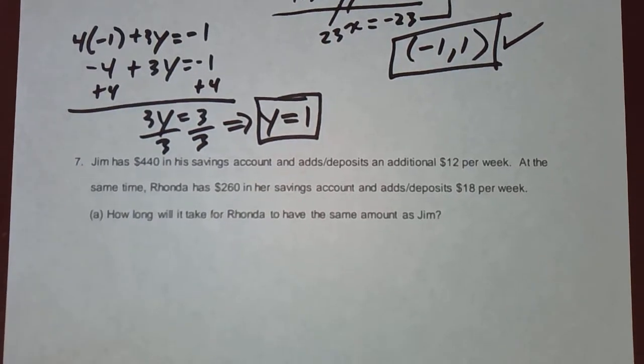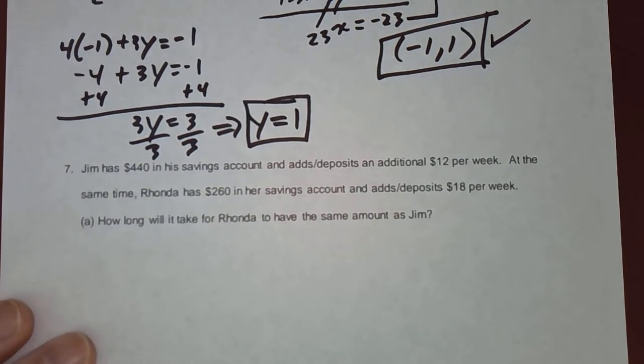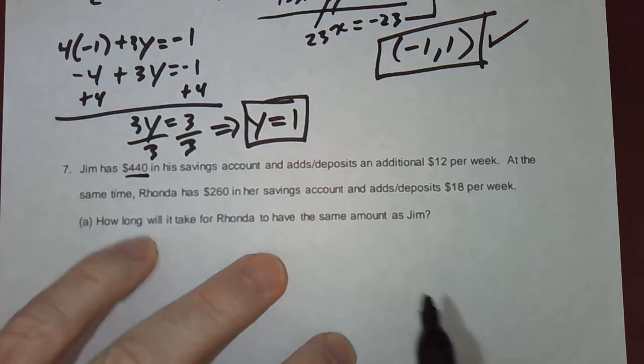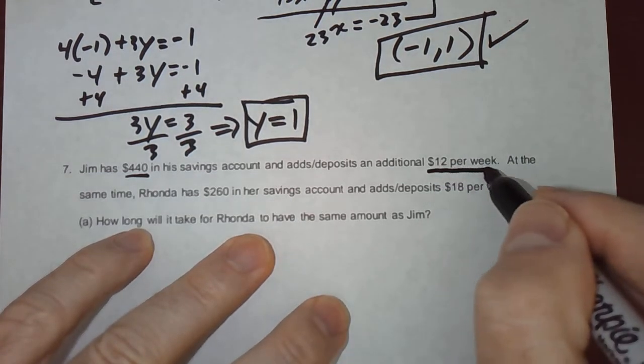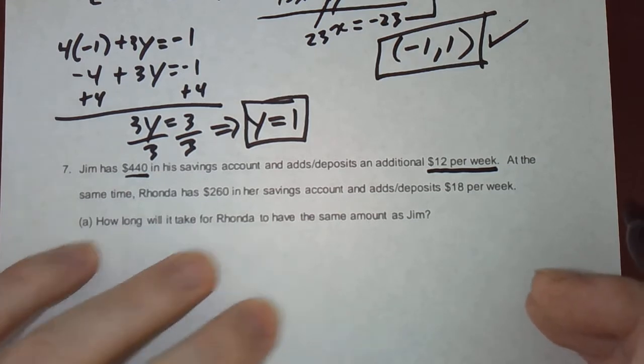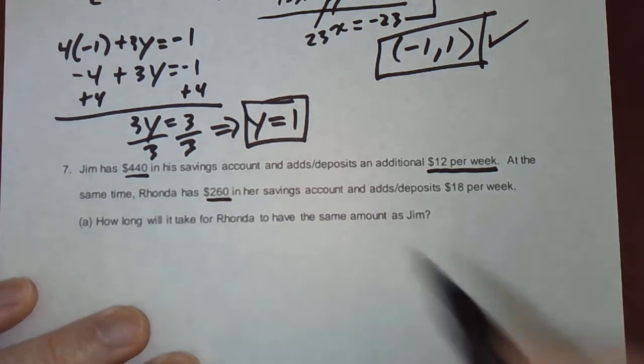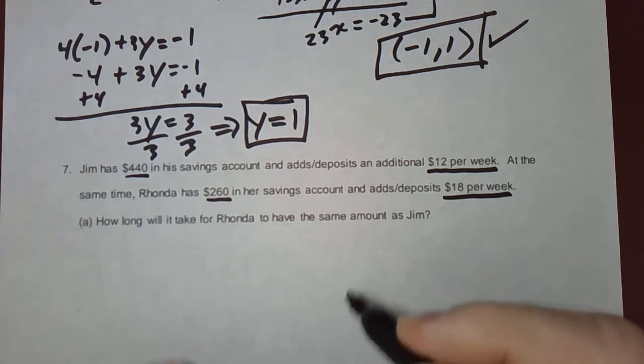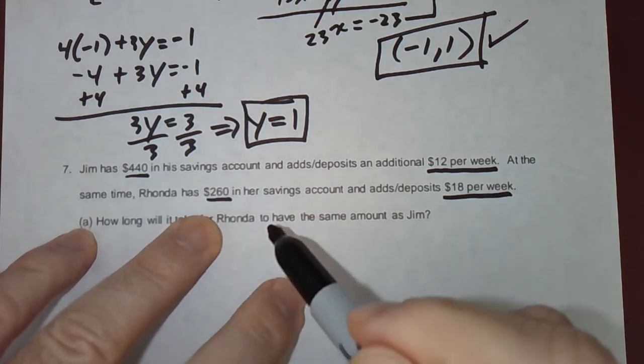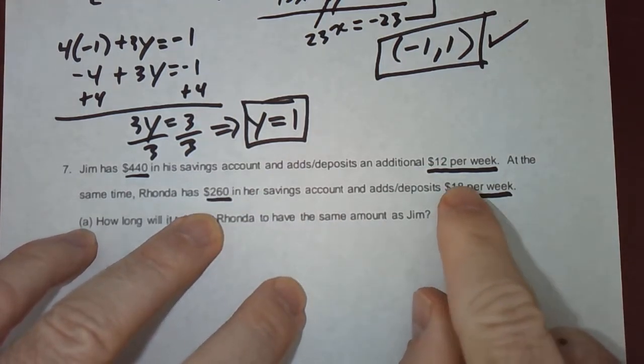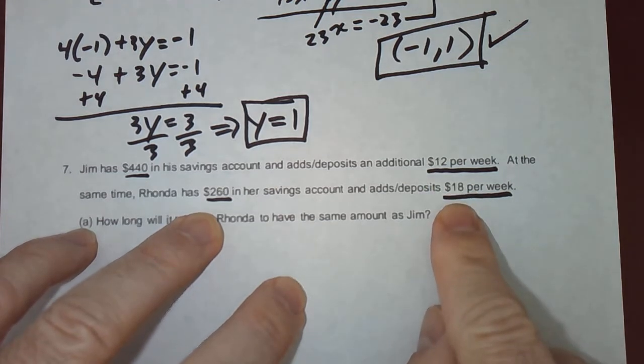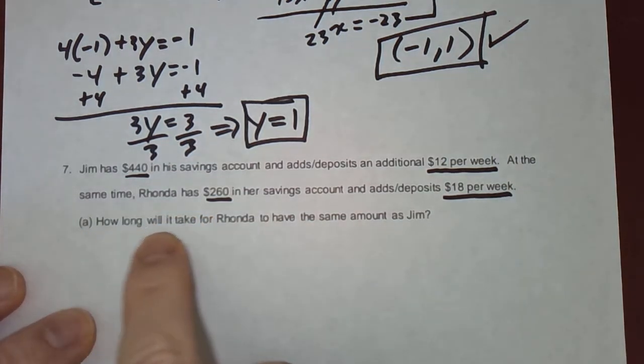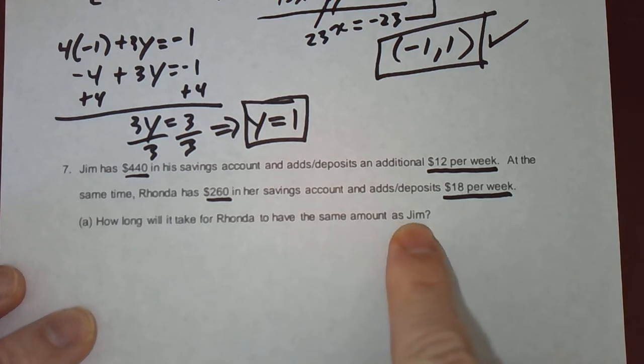Now the last example. We're going to have a bit of a word problem to do here. Jim has $440 in his savings account. He adds or deposits an additional $12 every single week. At the same time, Rhonda had $260 in her savings account. And she adds or deposits $18 per week. Well, notice that she starts with less than Jim has. But she's adding more money each week. So eventually she's going to catch him and even surpass his amount. So the question is, how long will it take for Rhonda to have the same amount as Jim?